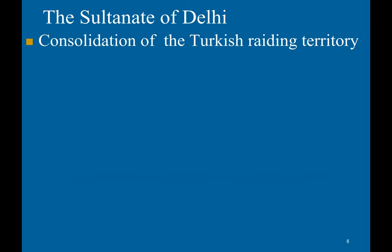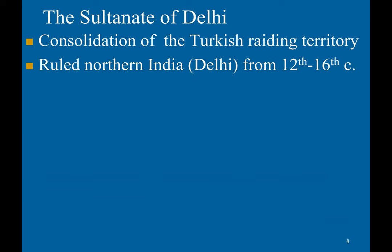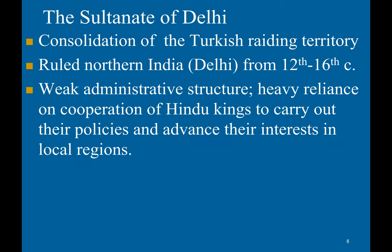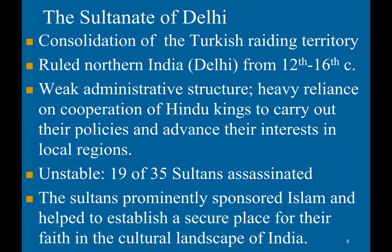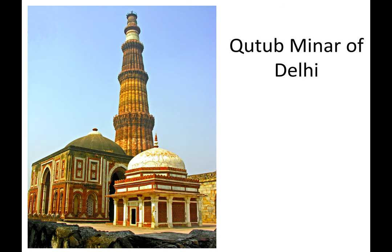The next major unification attempt was the Sultanate of Delhi, a consolidation of the Turkish raiding territory. It ruled northern India from Delhi from the 12th to the 16th century. It had a weak administrative structure with heavy reliance on cooperation from Hindu kings to carry out its policies. It was not politically stable — 19 of the 53 sultans were assassinated. However, the sultans prominently sponsored Islam and helped establish a secure place for their faith in India's cultural landscape. This is an example of a mosque they built, the Qutb Minar of Delhi.